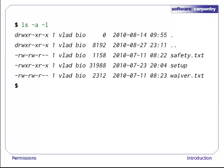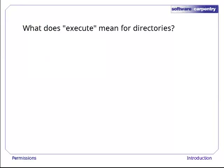Before we go any further, let's run ls -al to get a long-form listing that includes directory entries that are normally hidden. As you can see, the permissions for dot and dot dot — this directory and its parent — start with a D. But look at the rest of their permissions: the X means that execute is turned on. What does execute mean for a directory? It's not a program — how can we run a directory?